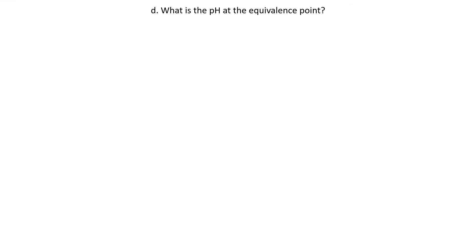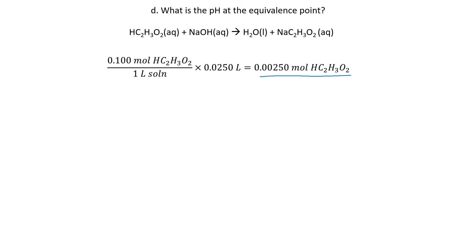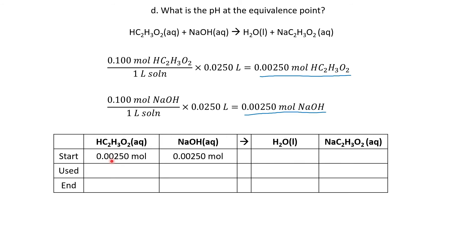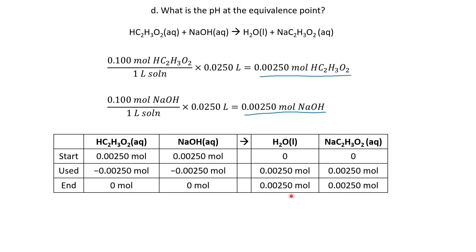Now on to the equivalence point — we want the pH at the equivalence point. Here is my chemical reaction. At the equivalence point, I have added an equal number of moles of sodium hydroxide — 25 milliliters of 0.1 molar sodium hydroxide gives the same moles as our acid. Setting up my table, both acid and base go to zero, and I form some product.